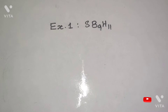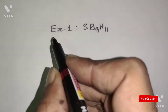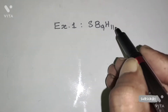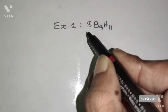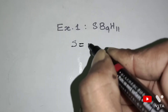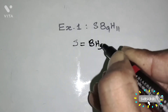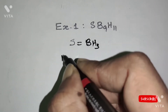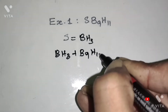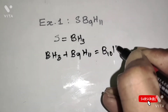Now I am going to show you an easy method to find the cluster structure of heteroboranes. Example 1: the heteroborane compound is SB9H11. Sulfur is a group 16 element, so sulfur is isoelectronic with BH3 unit. Sulfur equals BH3. Therefore, BH3 + B9H11 gives a total of B10H14.